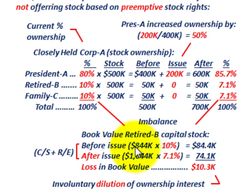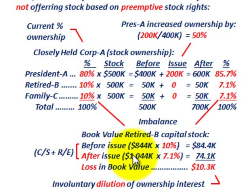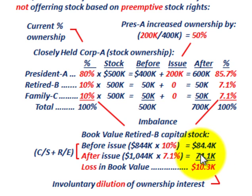Before the issue, the book value was sitting at $844,000 — that's the common stock plus retained earnings minus any liabilities. So $844,000 times his 10% ownership means his book value was sitting at $84,400. After the issue, he ends up with only 7.1% ownership in the company. The capital stock and retained earnings increased by $200,000 up to $1,044,000. So at the 7.1% interest, he ends up with a book value of $74,100.